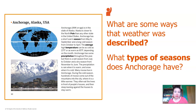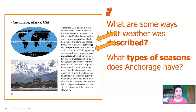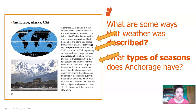Did you find a piece of information that describes the weather? Maybe it was about temperature or conditions or even precipitation? I found a piece right here. It says that Anchorage has a short warm season from May to September and a long cold season from October to April. I also found this: the average high temperature can be as cold as 23 degrees Fahrenheit or as warm as 65 degrees Fahrenheit depending on the month. That's a way to describe the weather by giving a range of temperatures. Anchorage also has a wet season from July to October and a dry season from November to June.